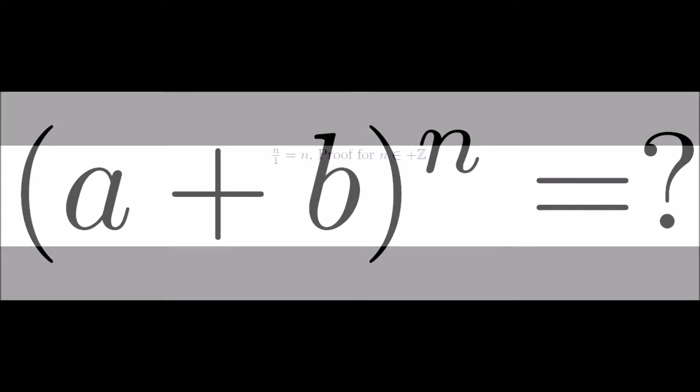Let's take a very simple example of proving that every positive integer divided by 1 is itself. So n over 1 equals n, where n is a positive integer.